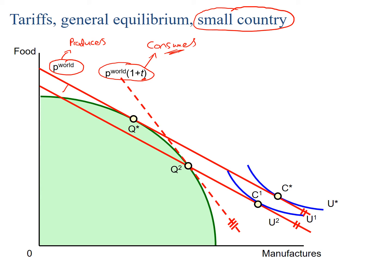We see a shift or decrease in income levels because we're shifting production to less efficient producers. In the free trade equilibrium we were producing here, but when we introduce a tariff we're now producing at a less efficient point, induced by the tariff. Therefore we have this shift downwards in the income level.